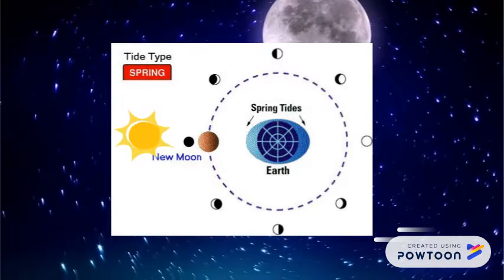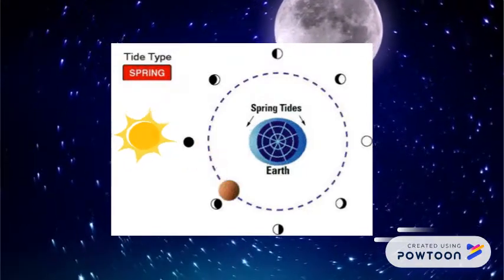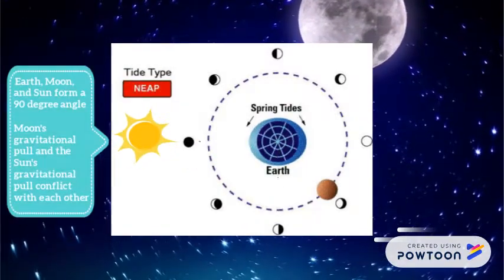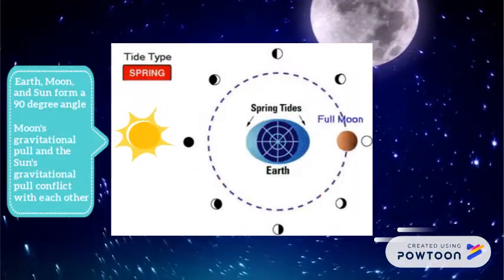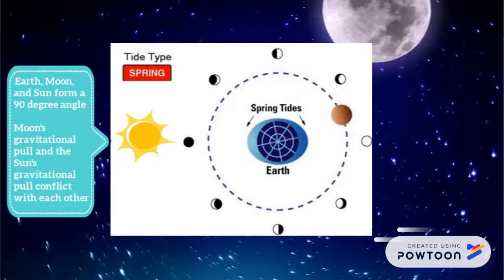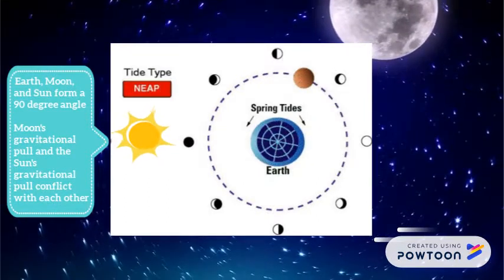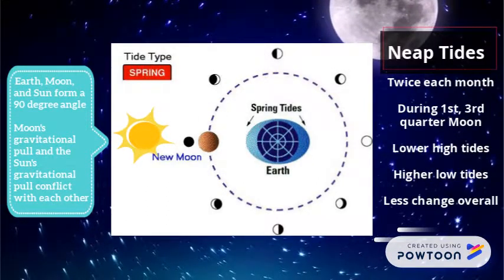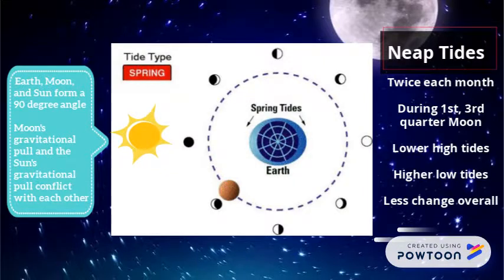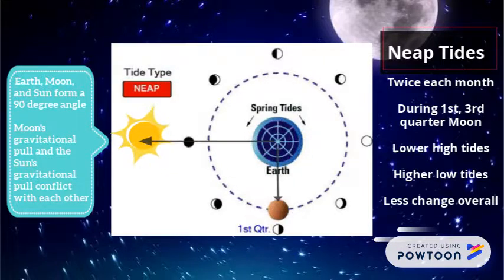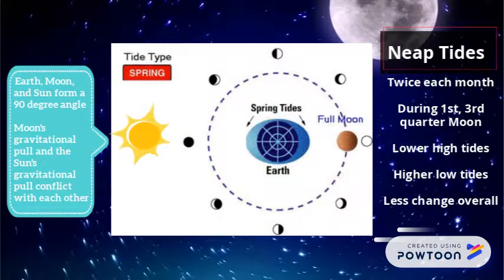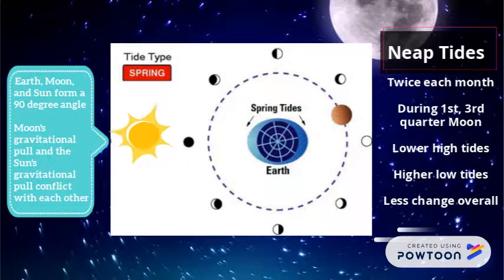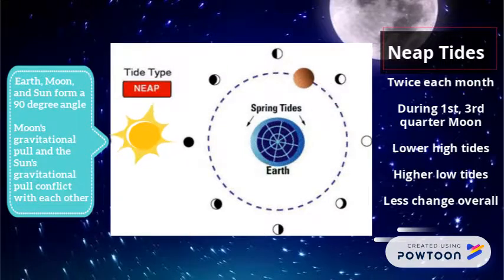For neap tides, the earth, moon, and sun form a 90-degree angle, while the moon's gravitational pull and the sun's gravitational pull conflict with each other, creating a lower high tide and a higher low tide. It has less change overall.